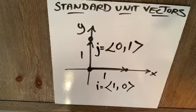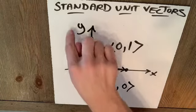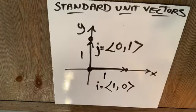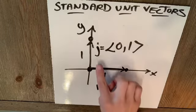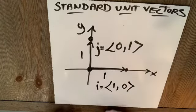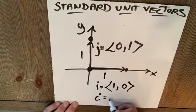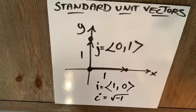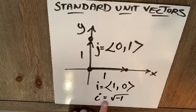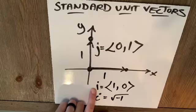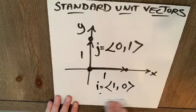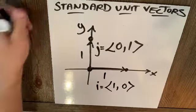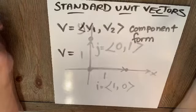So a standard unit vector in the direction of the positive y-axis is known as j. i is <1,0>, j is <0,1>. Unfortunately, you see this curvy i we use with complex imaginary numbers. If it's a straight up and down i, then we're talking about a standard unit vector in the direction of the positive x-axis and not that square root of negative 1.